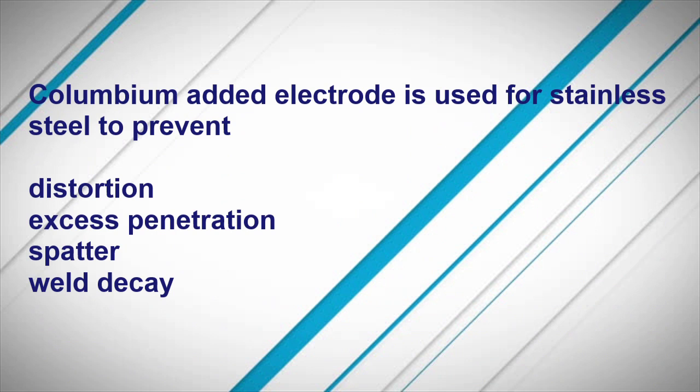Columbium added electrode is used for stainless steel to prevent which defect? It prevents weld decay, which is in the form of intergranular corrosion.